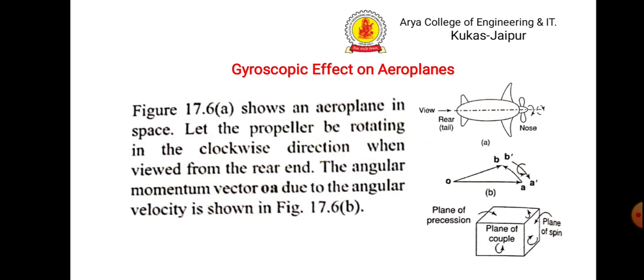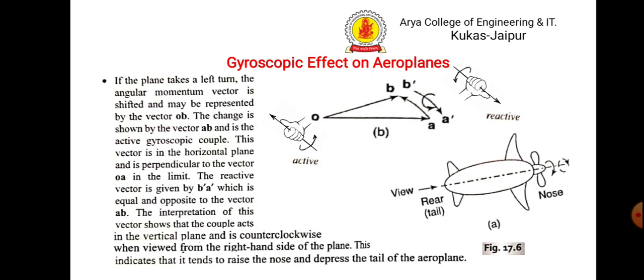We will assume that the propeller is rotating clockwise direction when viewed from the rear end and the angular momentum due to angular velocity is shown in figure. Now, suppose the plane is taking left hand side turn.